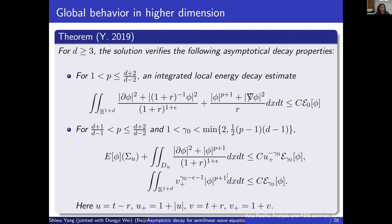Now let's see what our new results are. In higher dimensions, d greater or equal to three, for all p we can prove some sort of integrated local energy decay estimates and also energy flux decay estimates of this form. The lower bound for p is one plus two over d minus one, which is much less than the conformal power. This result tells us something like the energy flux through a hyperspace away from the light cone decays in terms of the distance.